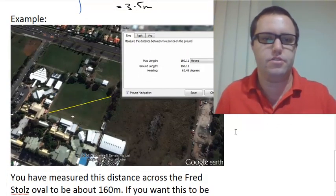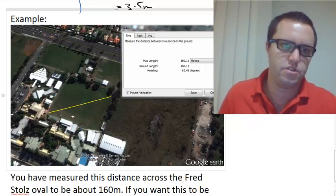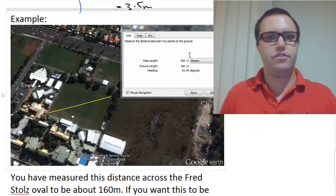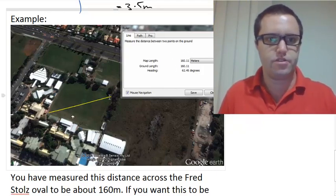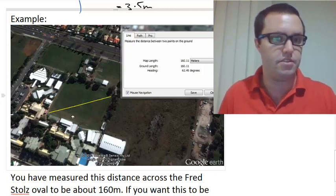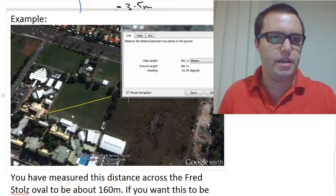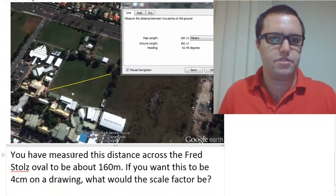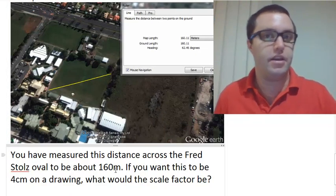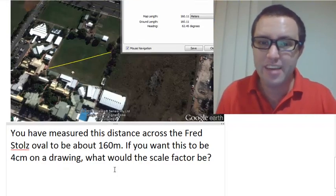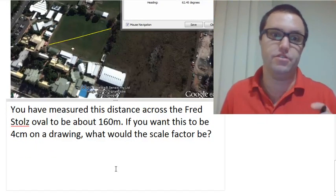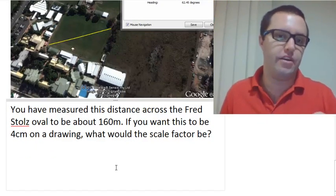Here's me using Google Earth. This is our school and Fred Stolz Oval. As you can see, I've measured across here with Google Earth to show that that is about 160 meters on the diagonal. You've measured this distance across the Fred Stolz Oval to be about 160 meters.